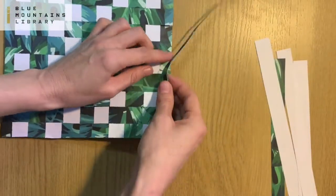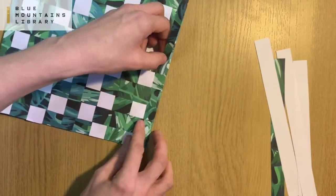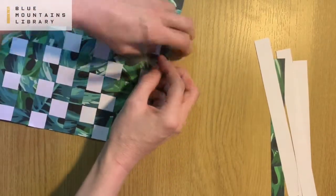Make your last strip one centimetre width instead of two centimetres. This is because we have that one centimetre bit at the top of our loom.